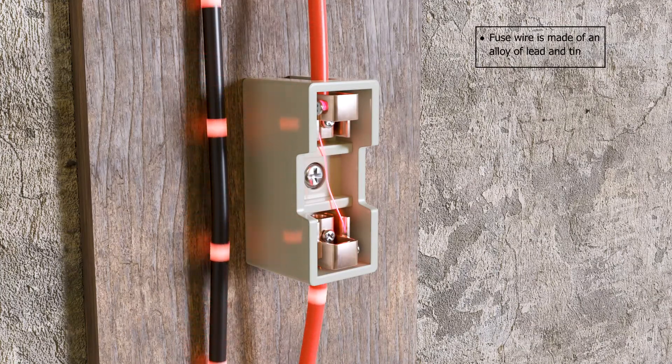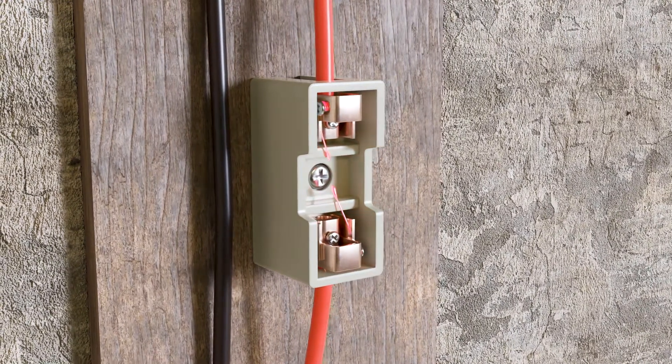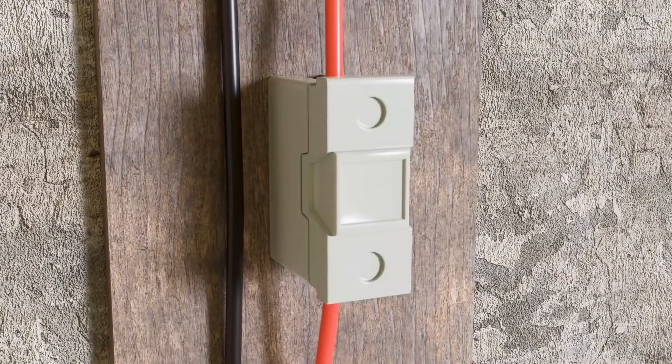When it gets too hot, the fuse wire melts because it has a low melting point. This action breaks the electric circuit, which helps to protect other electrical equipment from damage.